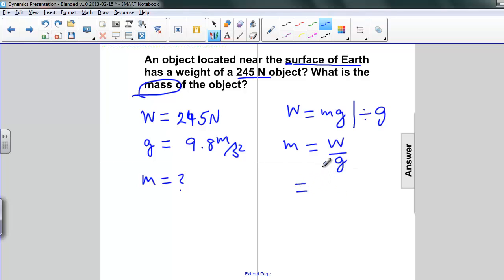Substituting for all the values, W being 245 newtons, and g being 9.8 meters per second squared.